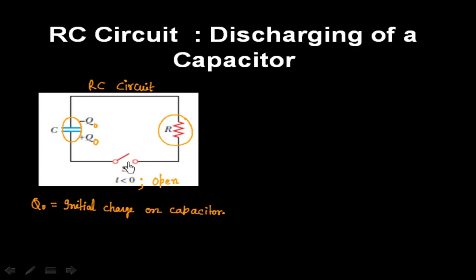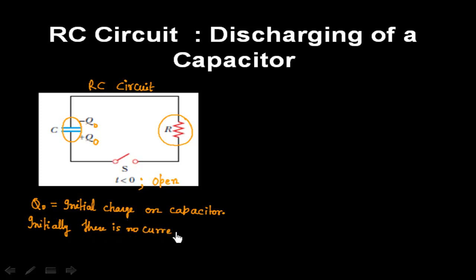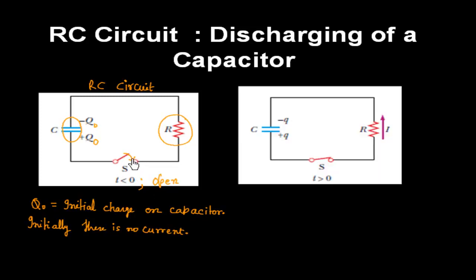Initially this circuit is open — that is the switch is open, there is no current in the circuit. Now let us say we close this switch, that is we throw this switch. So we will have something like this, and let us call this T is greater than 0.